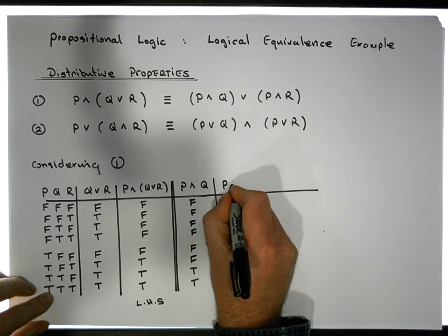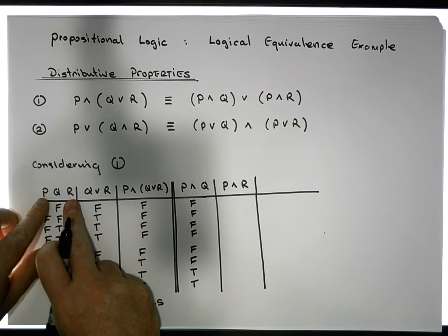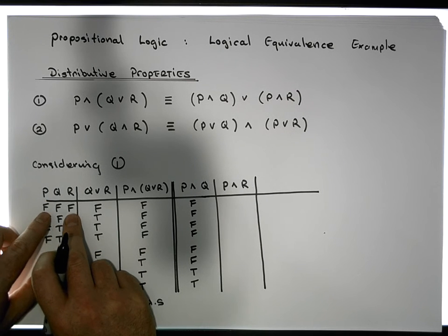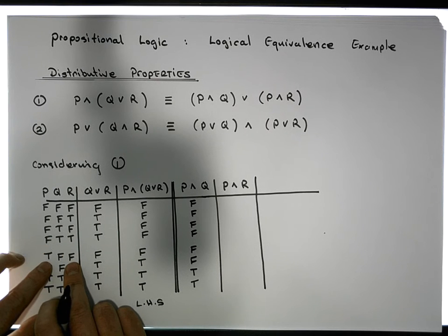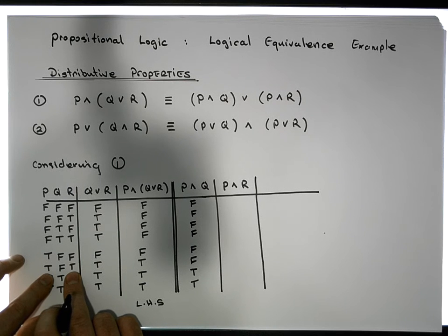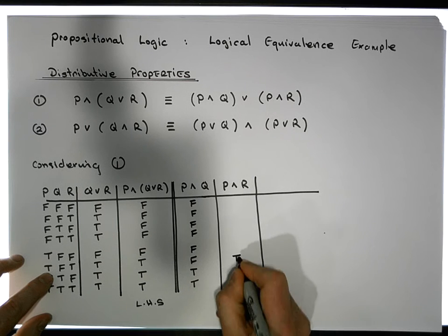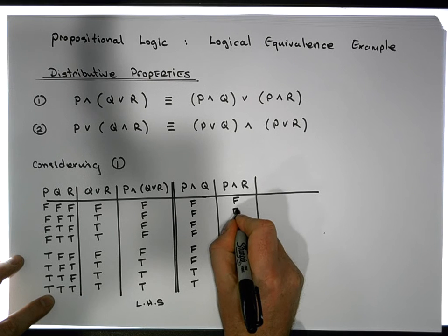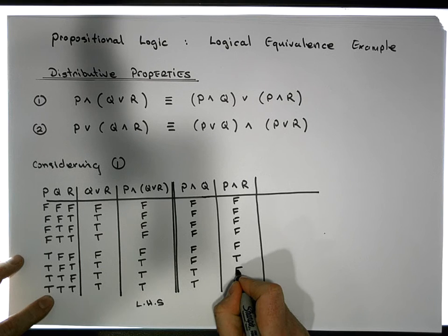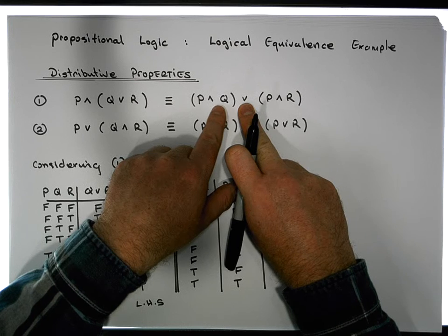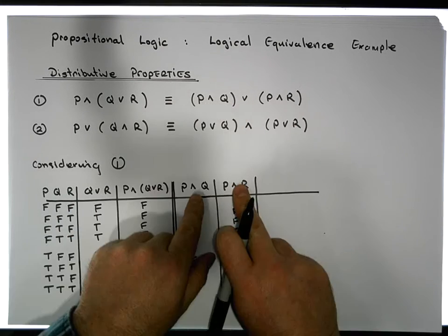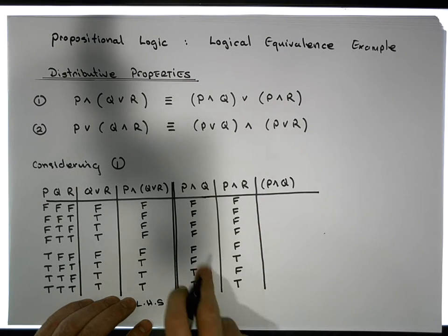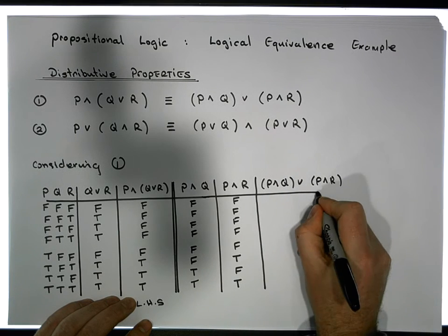Next we evaluate P AND R by looking at the P and R columns. Again, AND only gives true when both are simultaneously true. Checking each row: rows one through four have false in P, so those are false. Row five is true-false, row six is true-true giving true, row seven is true-false, and row eight is true-true giving true. Everywhere else is false. Now we have both operands evaluated for the final OR.